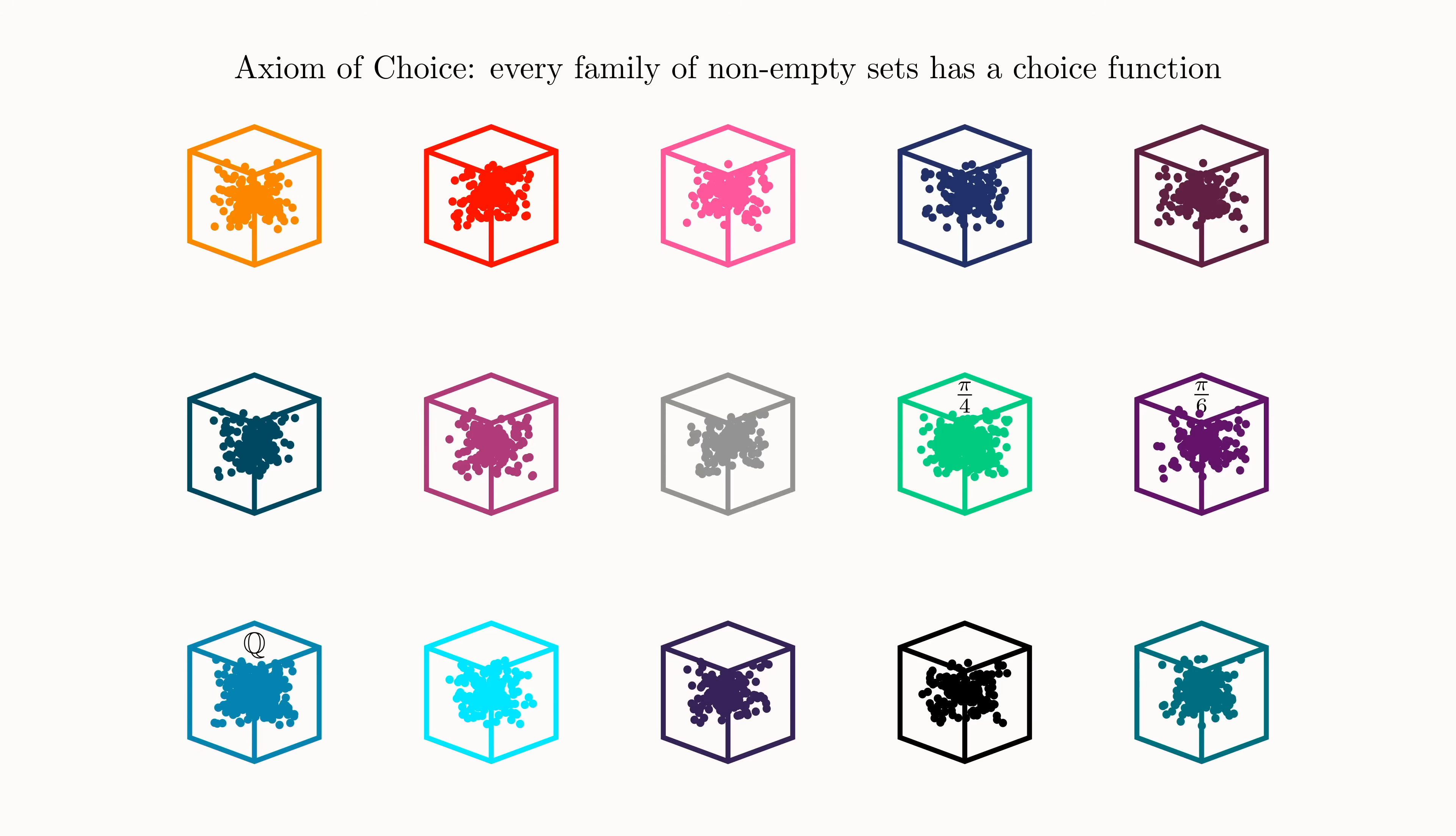For example, you can pick one half from the box that contains all the rationals. You can pick pi over 9 as a representative here. We already have pi over 4 and pi over 6 as representatives of these boxes.